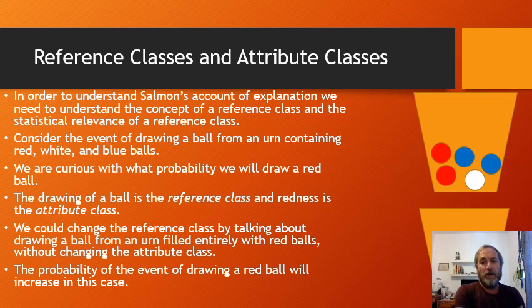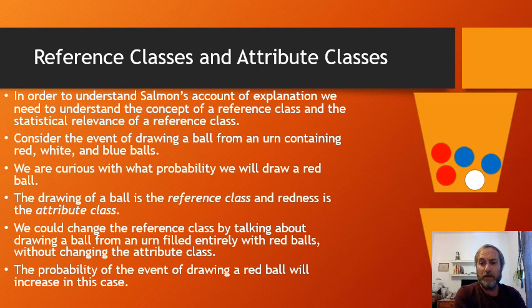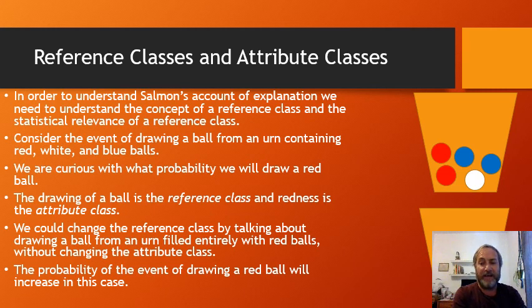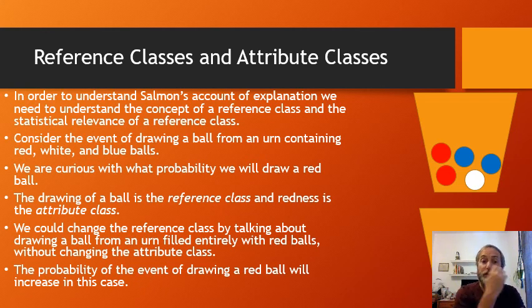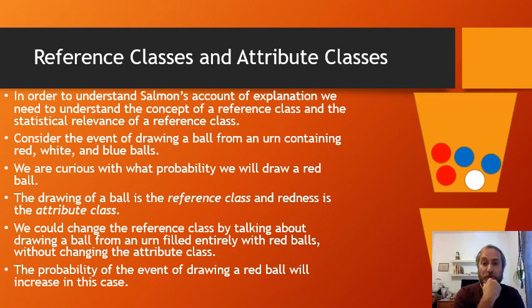To formalize this, we introduce some terminology. The big picture idea: a good explanation is one that makes the explanandum more likely. Now for the details — we need to talk about reference class and statistical relevance. Consider two urns, one with a few differently colored balls and one with all red balls. The drawing of a ball is the reference event, and redness is the attribute class — the property we're curious about.